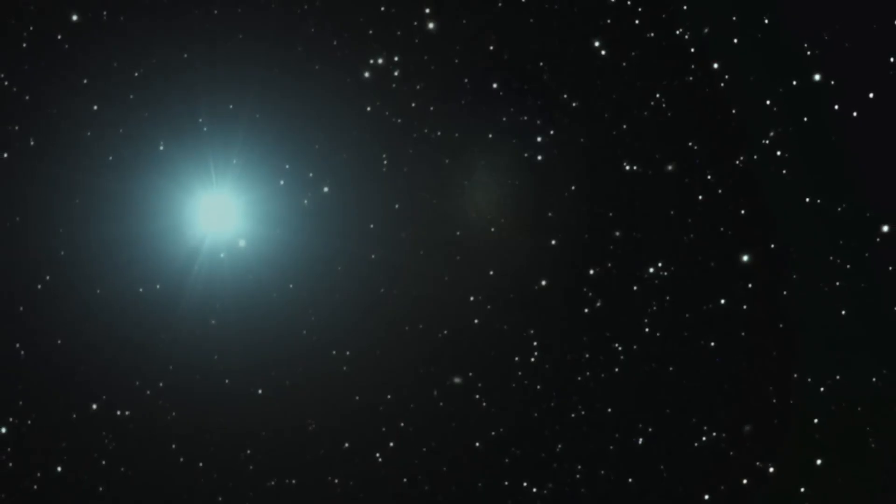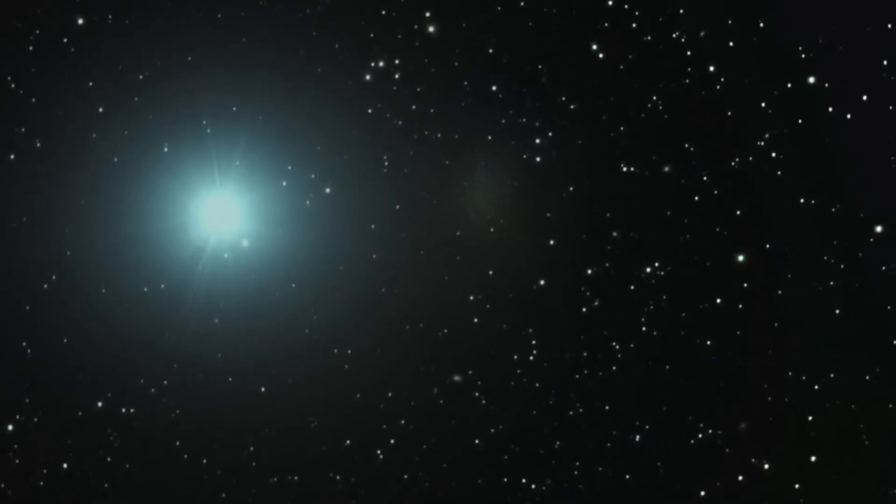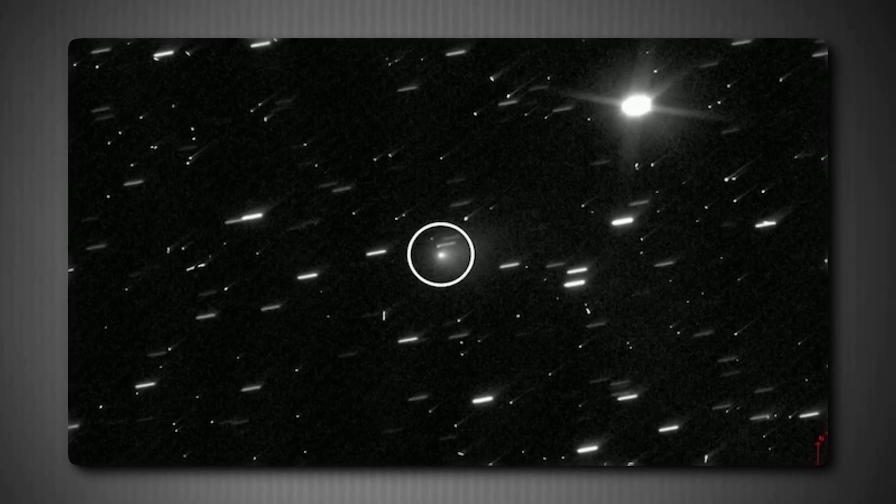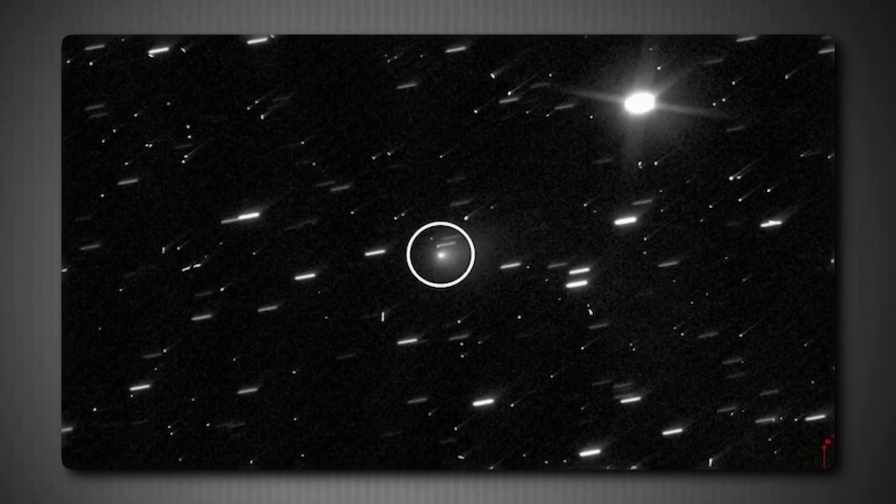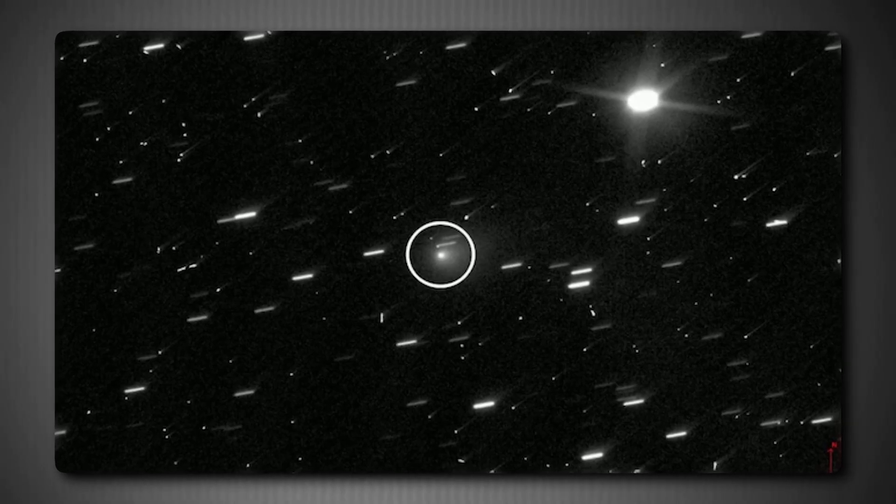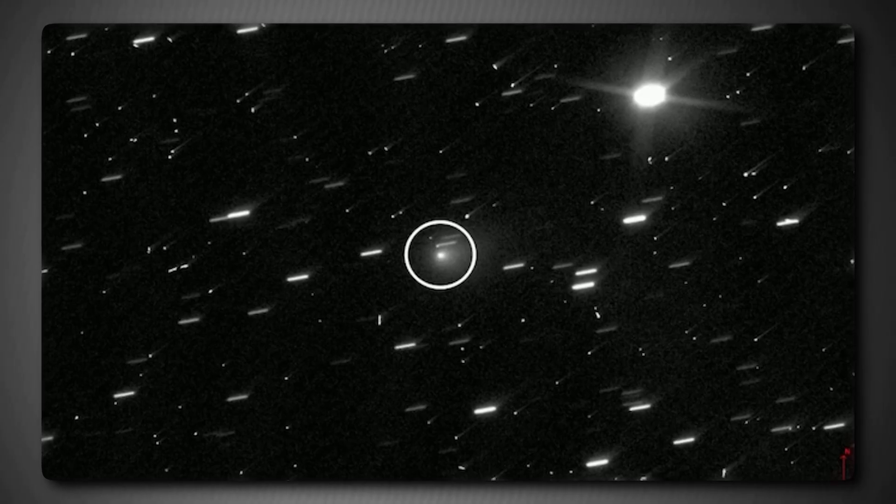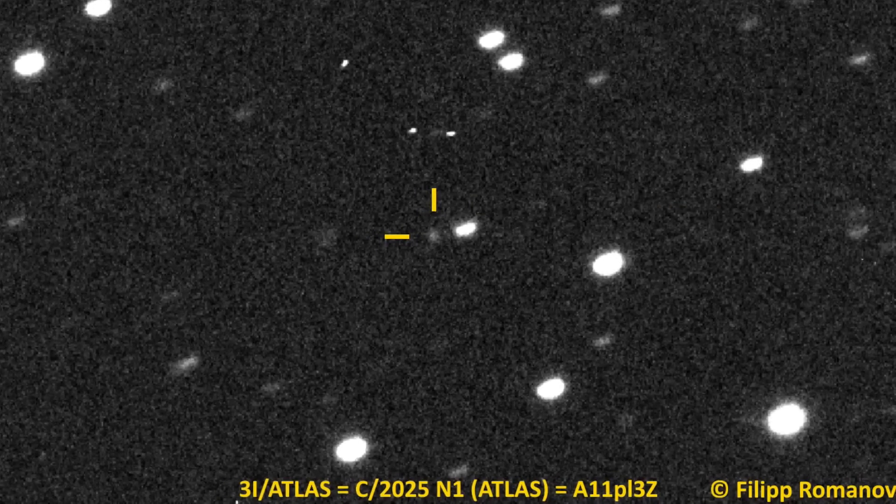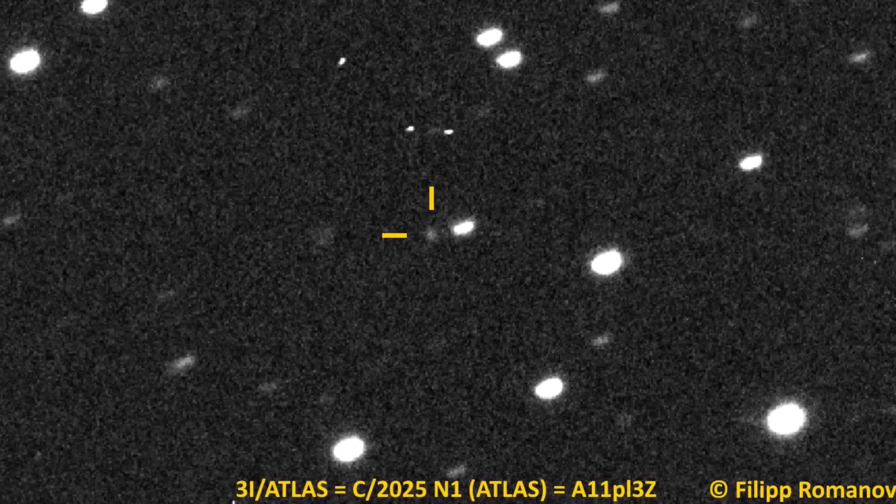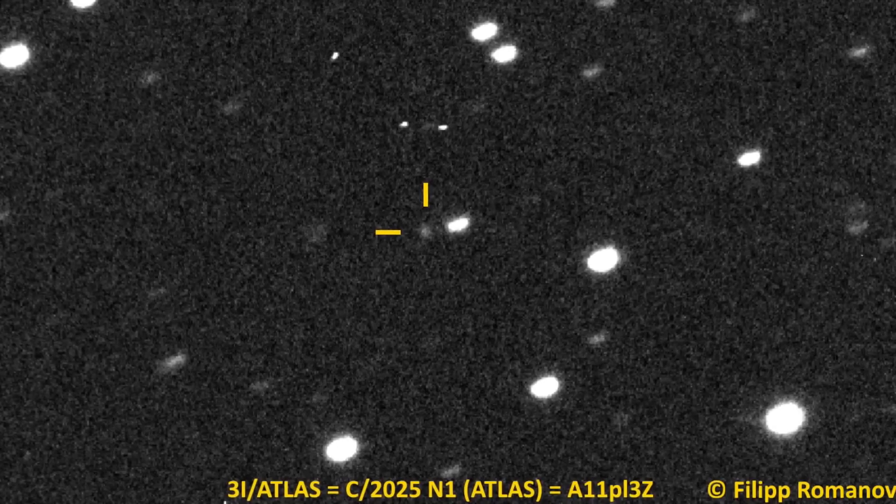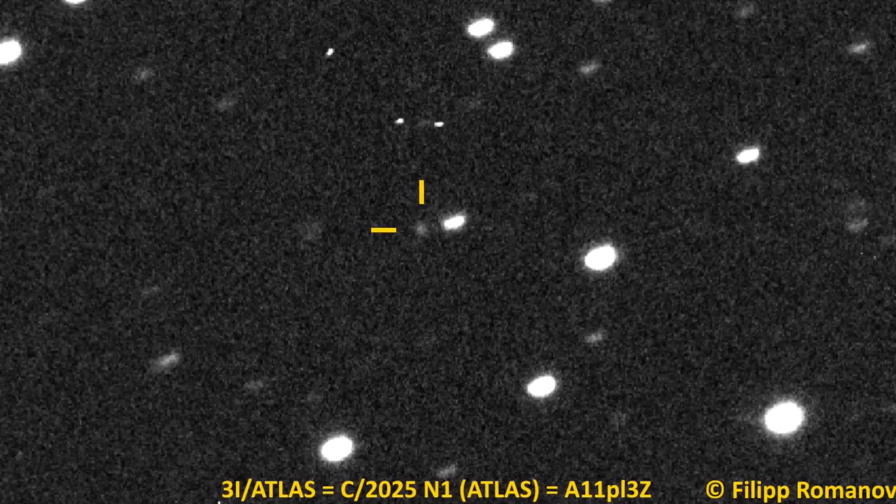As Tom Statler stated, it looks like a comet. It does comet things. It very, very strongly resembles in just about every way the comets that we know. The beauty of science is that debate and disagreement drive better observations and deeper understanding. Whether 3I ATLAS is a pure comet or something more unusual, it's teaching us that interstellar objects might be more diverse than we thought.